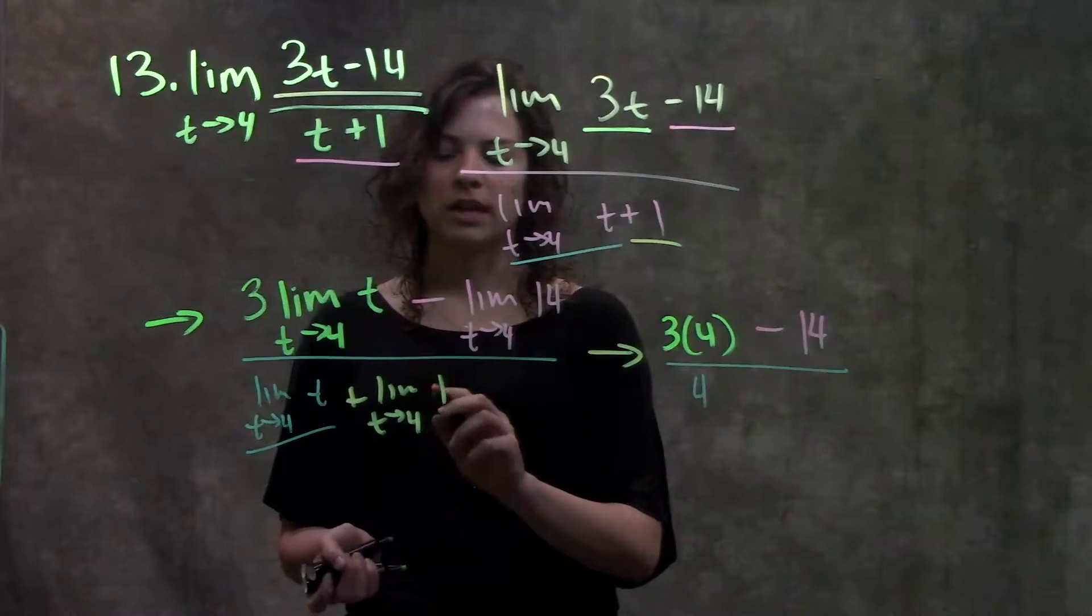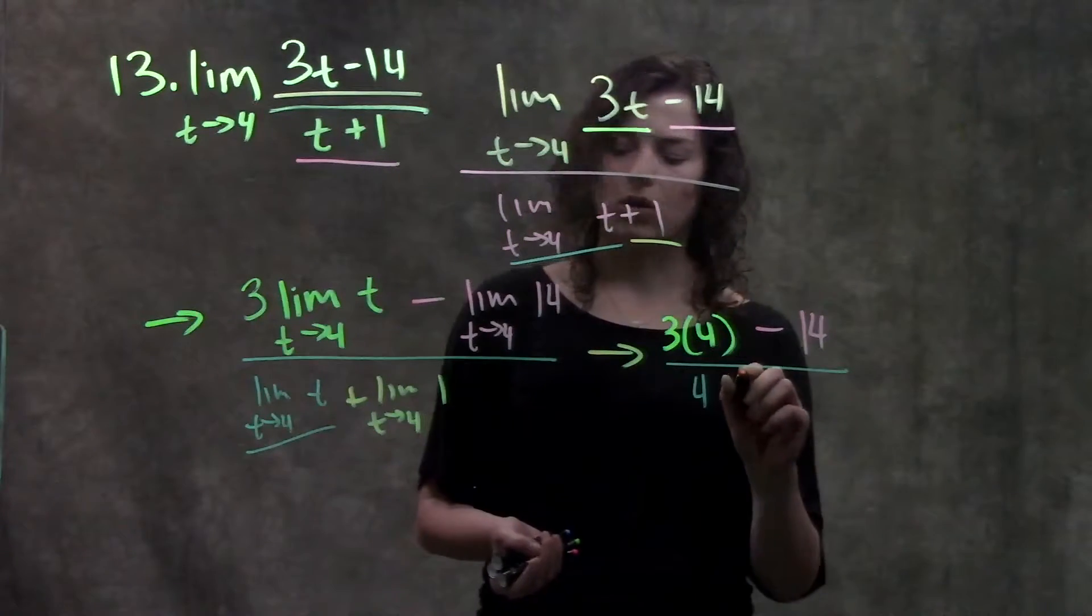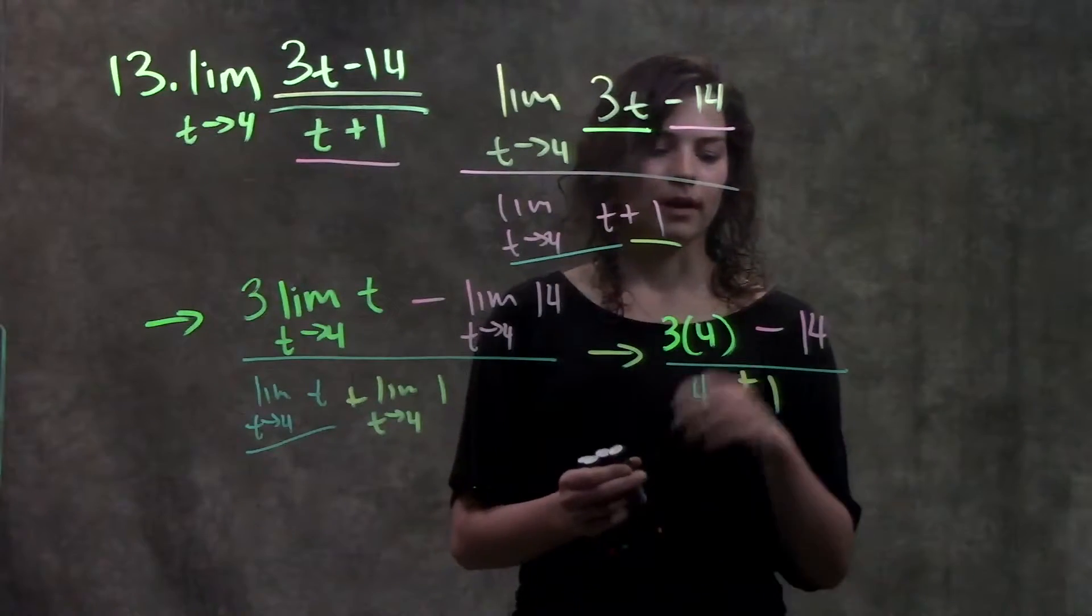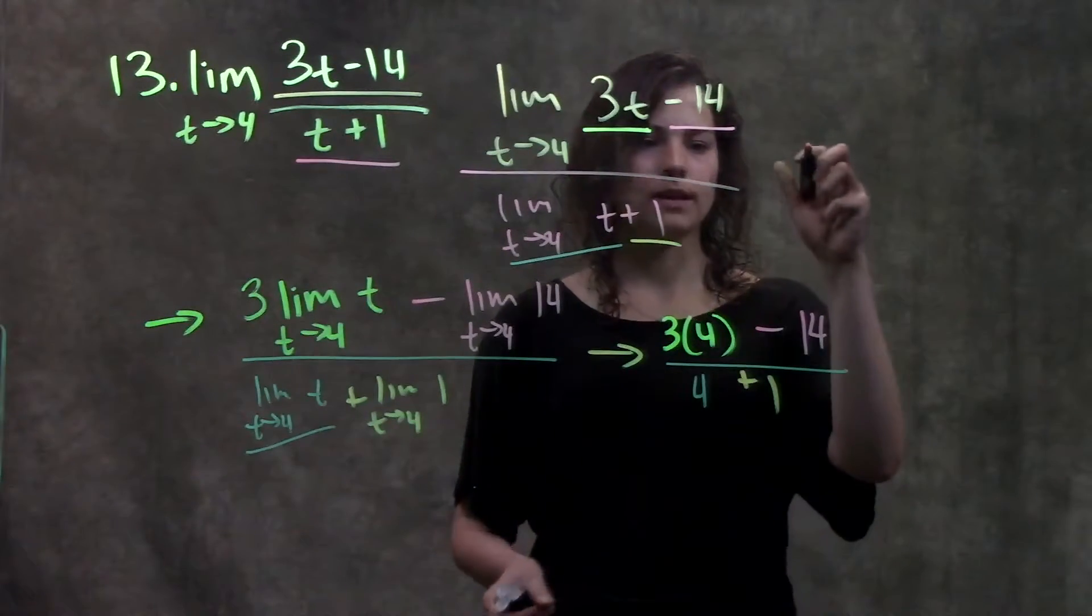So whatever this value is approaching, the limit of a constant is always just that constant. Okay, now I'm going to go ahead, simplify this, and get my answer.